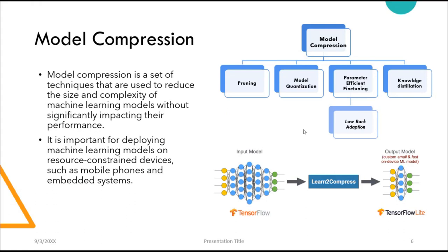We will talk about model compression specifically, because all other techniques involve hardware and depend on what hardware you are using. Model compression is a set of techniques used to reduce the size and complexity of a model without significantly impacting performance. It is very important for deploying LLMs on resource-constrained devices such as mobile phones, embedded systems, laptops, or limited GPUs — situations where hardware limitations become a significant issue when working with LLMs.